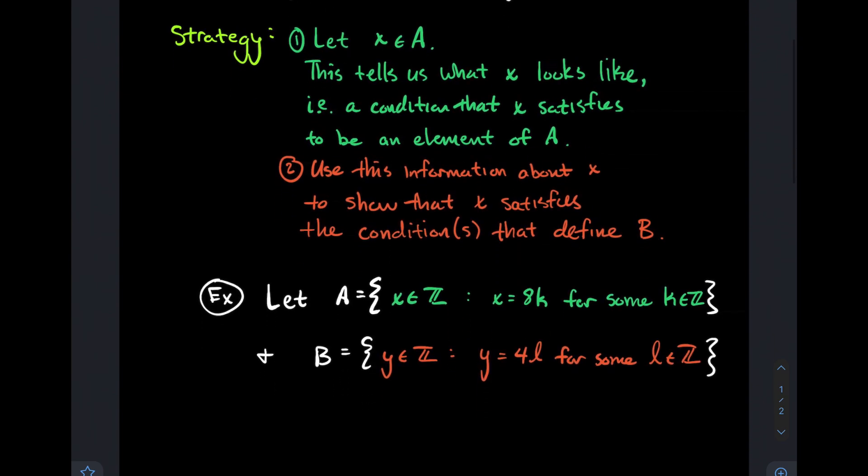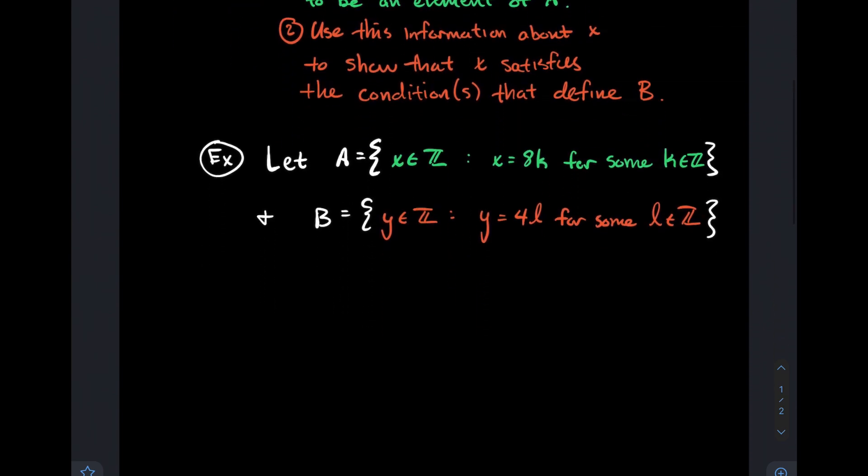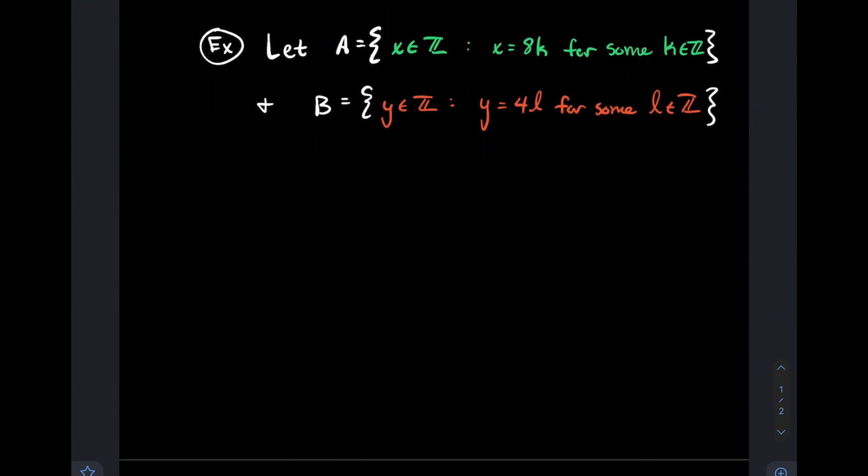In my first example, I've got two sets A and B. A is the set of all integers X such that X is equal to 8k for some integer k, so A is the multiples of eight. B is the set of all integers y such that y is equal to 4L for some integer L, so B is the multiples of four.